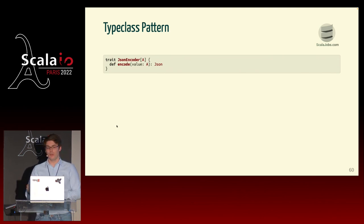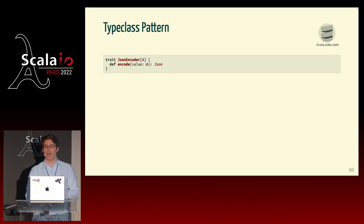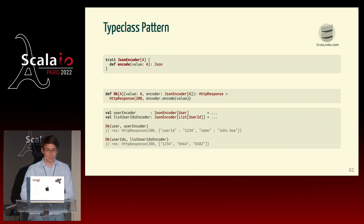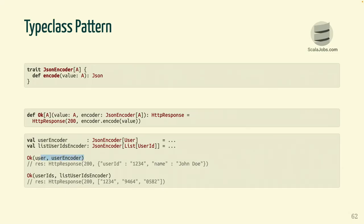We define a trait JSONEncoder — this is the type class. You recognize a type class because it's a trait that takes a type parameter, and that parameter is used in either the input or the output. We change our method OK to take a value of type A but also a JSONEncoder of type A, and we encode the value within the method. It works, but now we have an ugly API where you must manually specify which encoder to use.